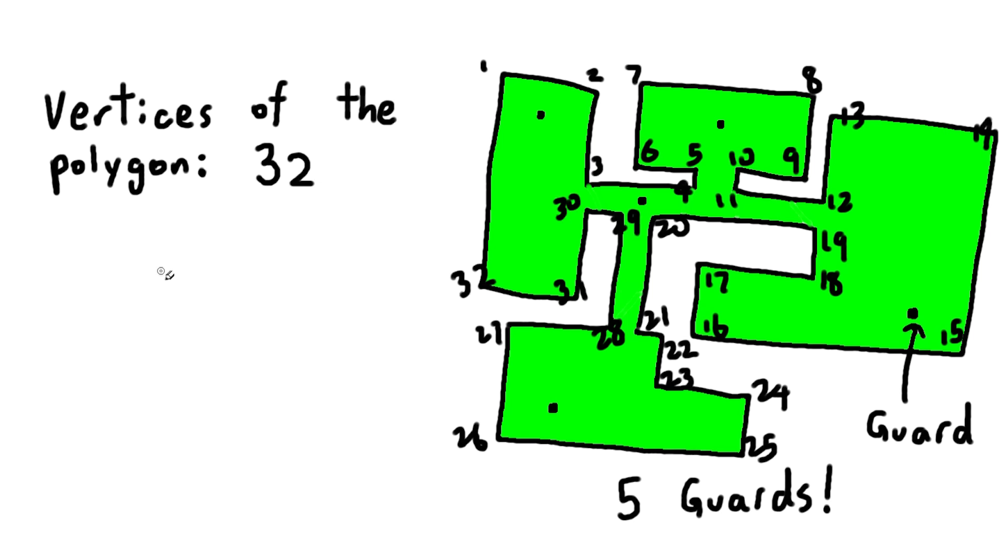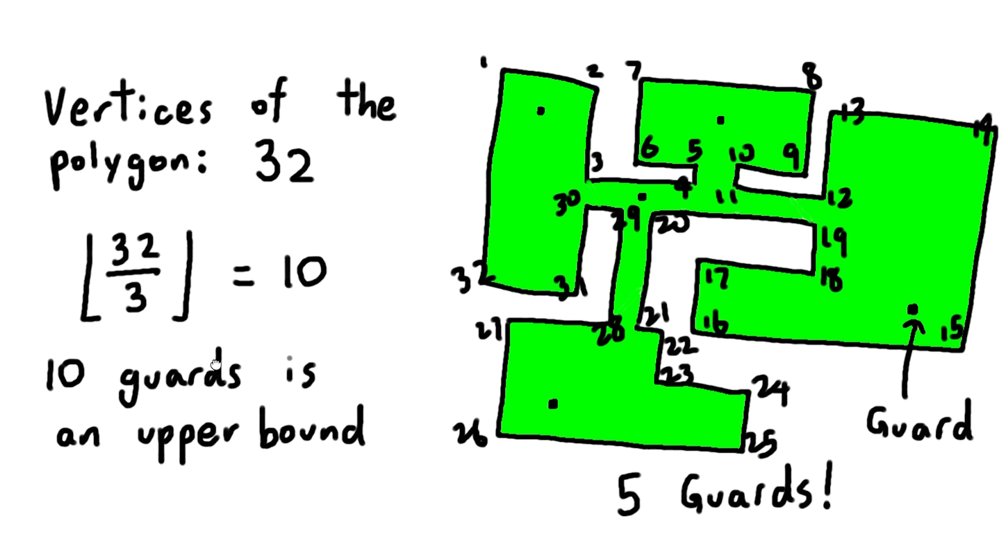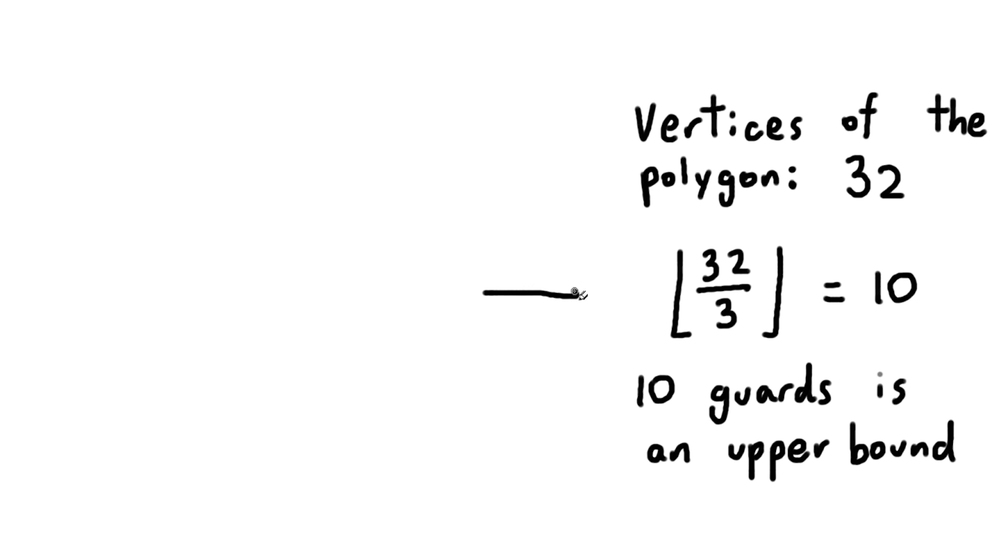This upper bound can be found by counting the vertices of the polygon, dividing by three, then ignoring the remainder. So ten guards is definitely enough for any museum with 32 vertices, even though it's possible to cut that number down to say, five or four.